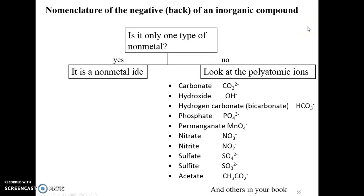The back half of the inorganic compound is negative. There's only two possibilities. Either it's going to be a nonmetal -ide, where it's all one particular nonmetal and we know the charge, or it's going to be a polyatomic ion of which you need to know four of the negative ones.